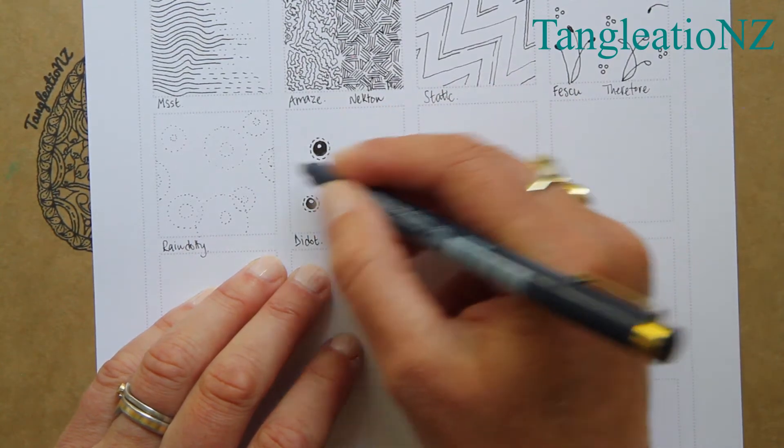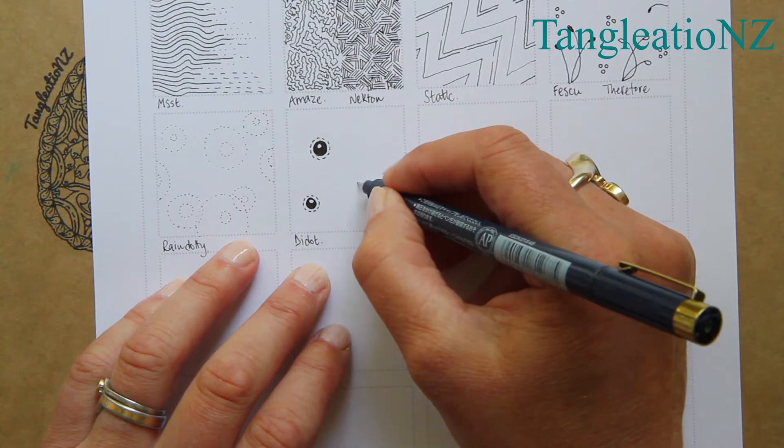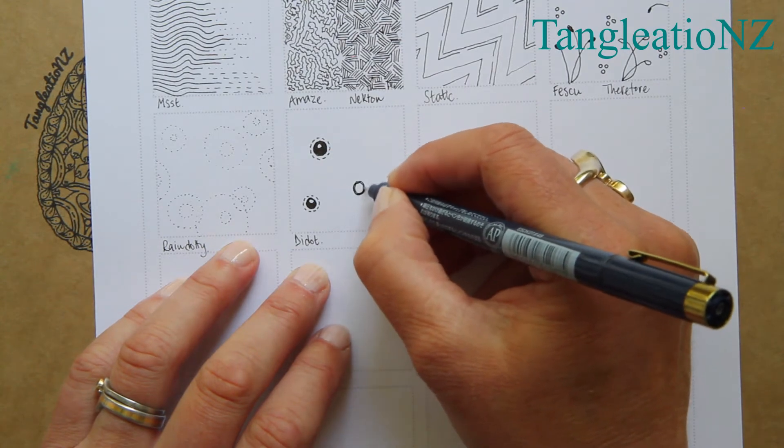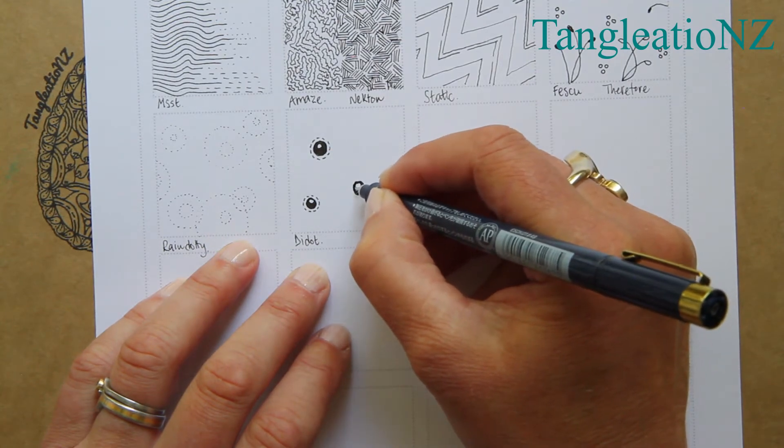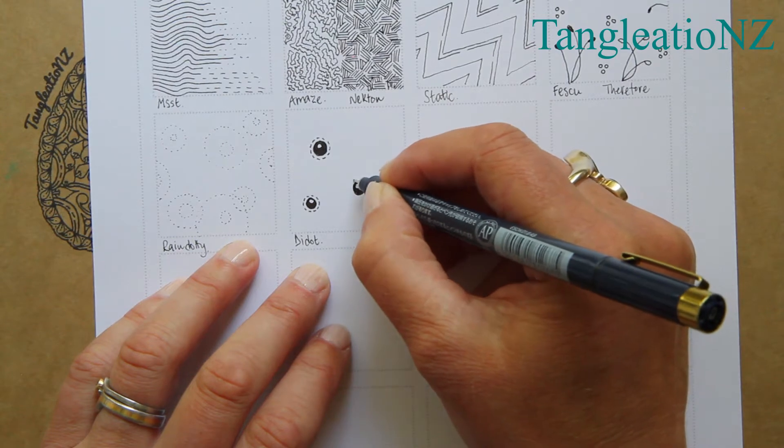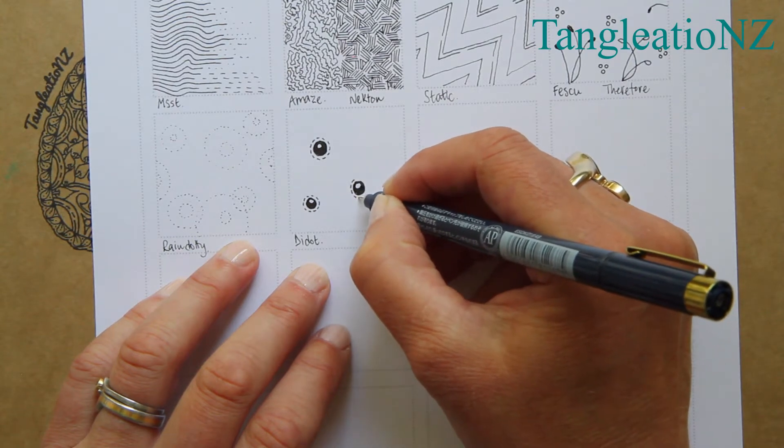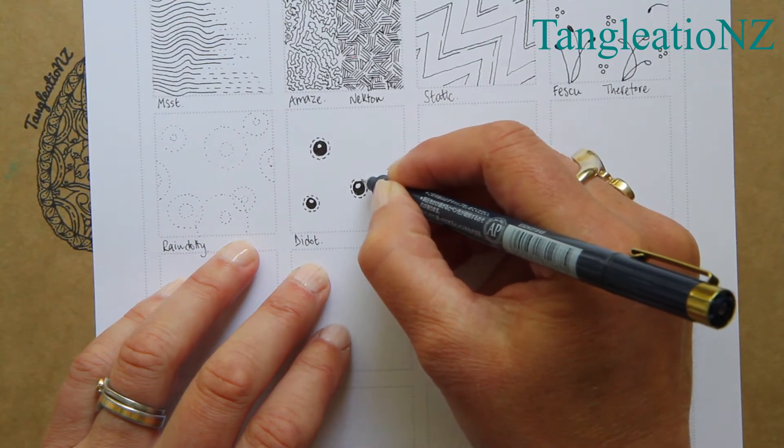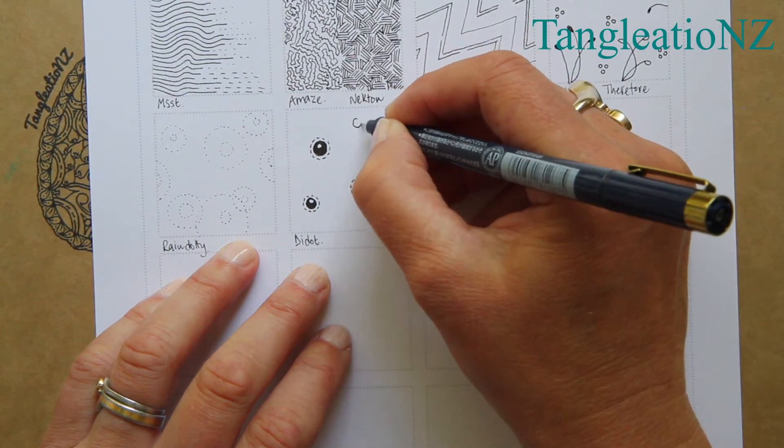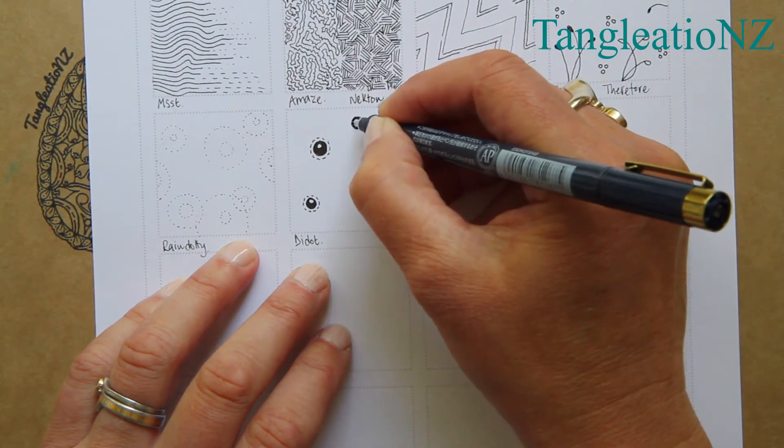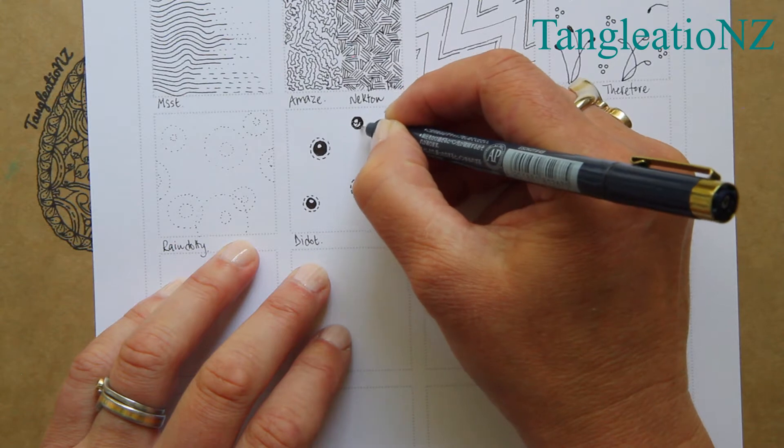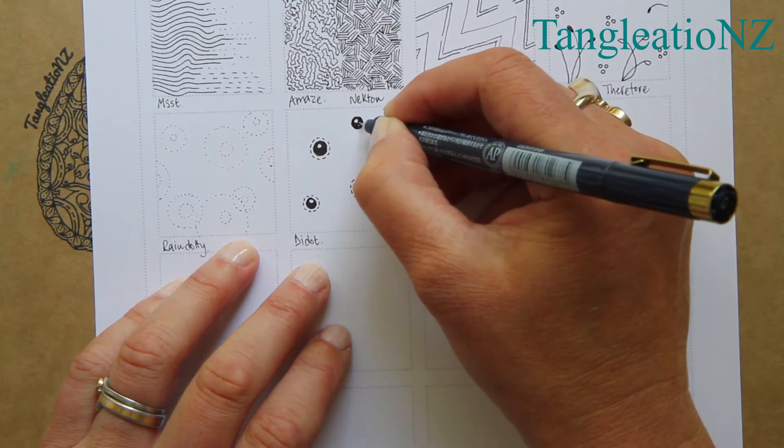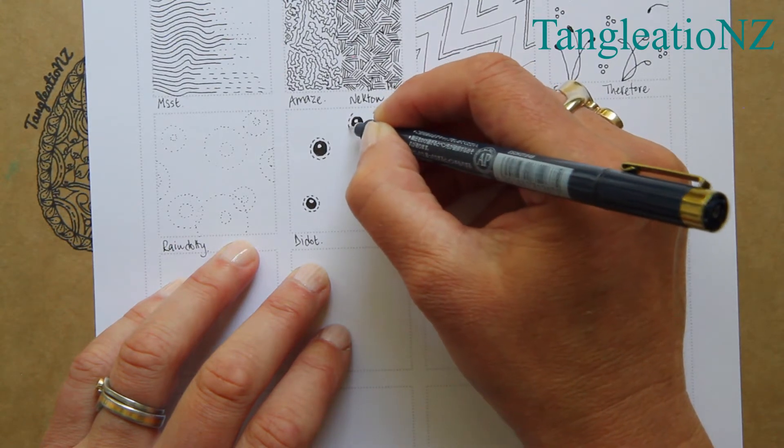I always imagine it's a sort of cousin of Rain Dotty as it begins to fill the space with a little bit more drama than its very light cousin. If you want a little bit of drama within a tile but not too much, this is really beautiful for filling in backgrounds.